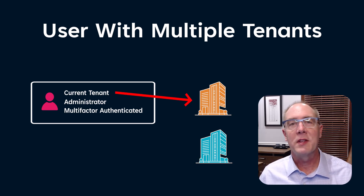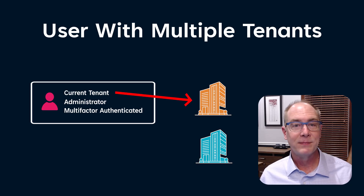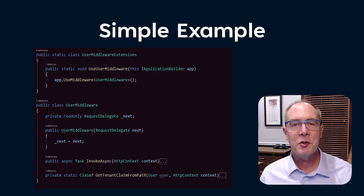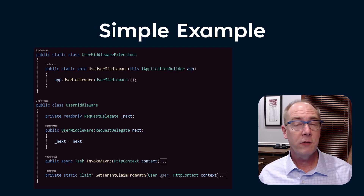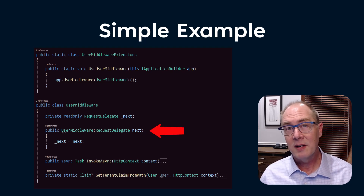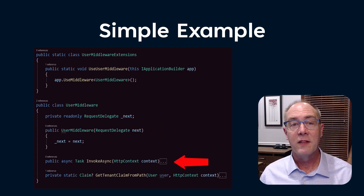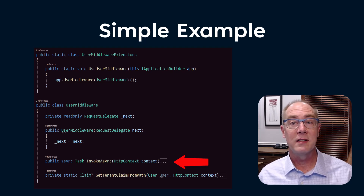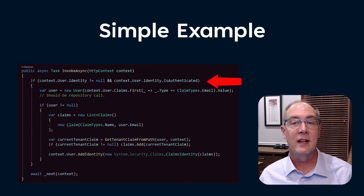Let's start with a stripped-down version of the middleware component, and then I'll show you a more complete example. It needs to keep track of the next component in the pipeline so that it can pass the request on down when it's done. The constructor for this class takes in a request delegate and stores it in the variable next. I also need to implement an invoke async function that takes in the HTTP context — that's the bag of information with all the stuff about the request. The first thing I need to do is check to see if the user is authenticated.